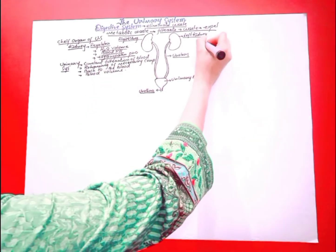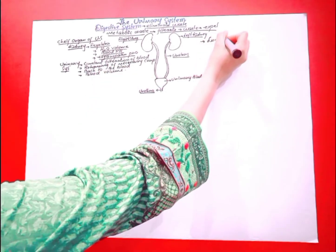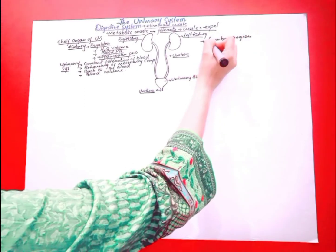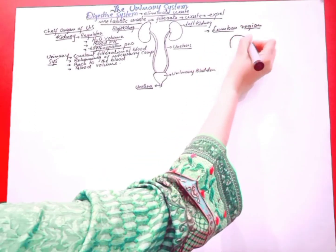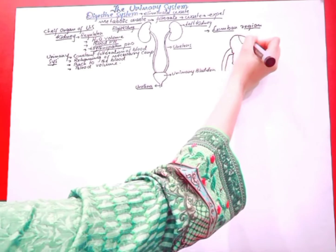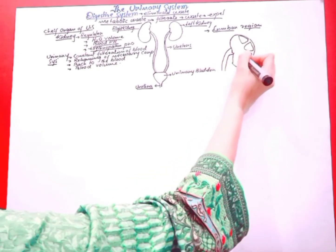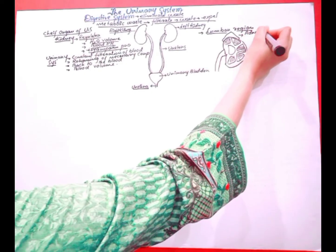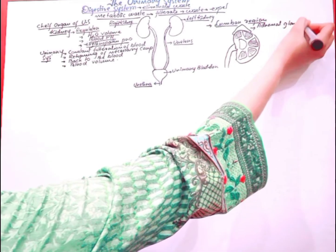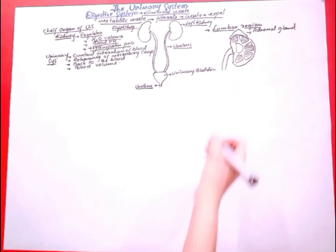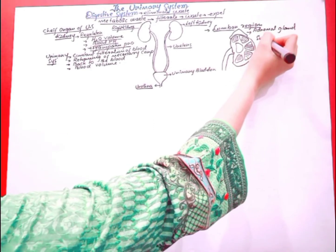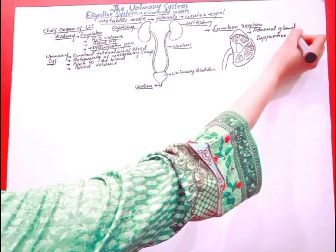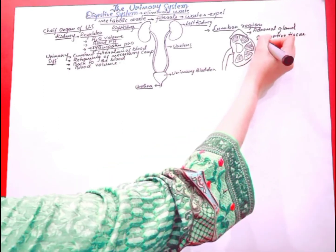The kidneys are present in the lumbar region and they are protected by the ribcage. This is the adrenal gland. Each kidney is surrounded by supportive tissue which is made up of three layers.